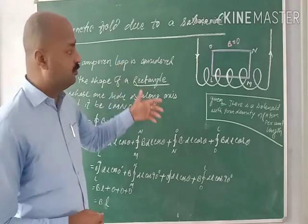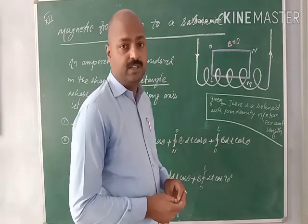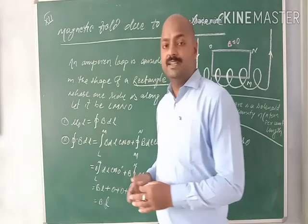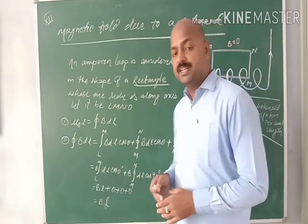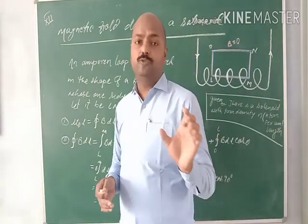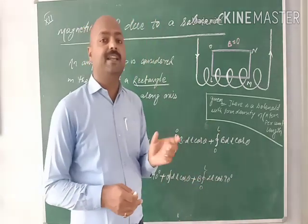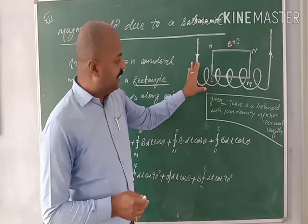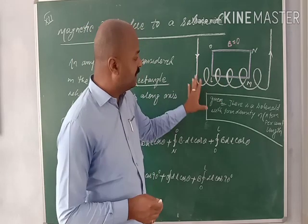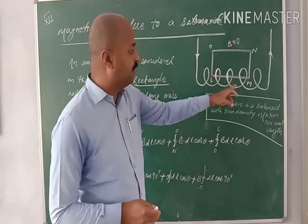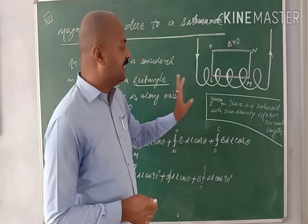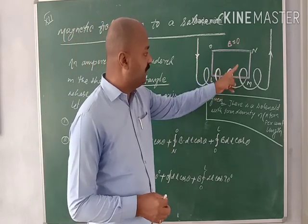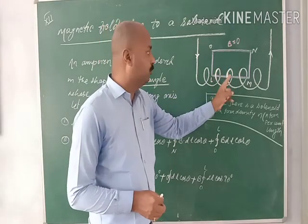First of all, as we know, whenever we want to find out the magnetic field around a current carrying conductor using Ampere's circuital law, we have to imagine an Amperian loop. So first of all, inside this solenoid — suppose this is a solenoid and current is flowing inside this current carrying conductor — we have to imagine an Amperian loop.